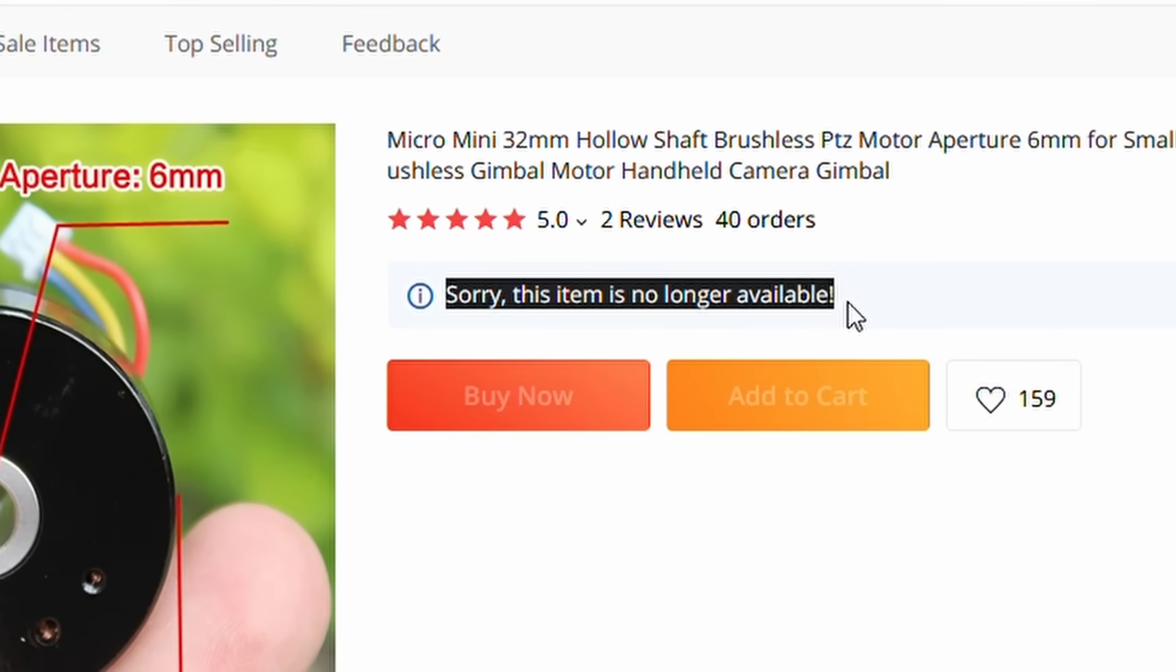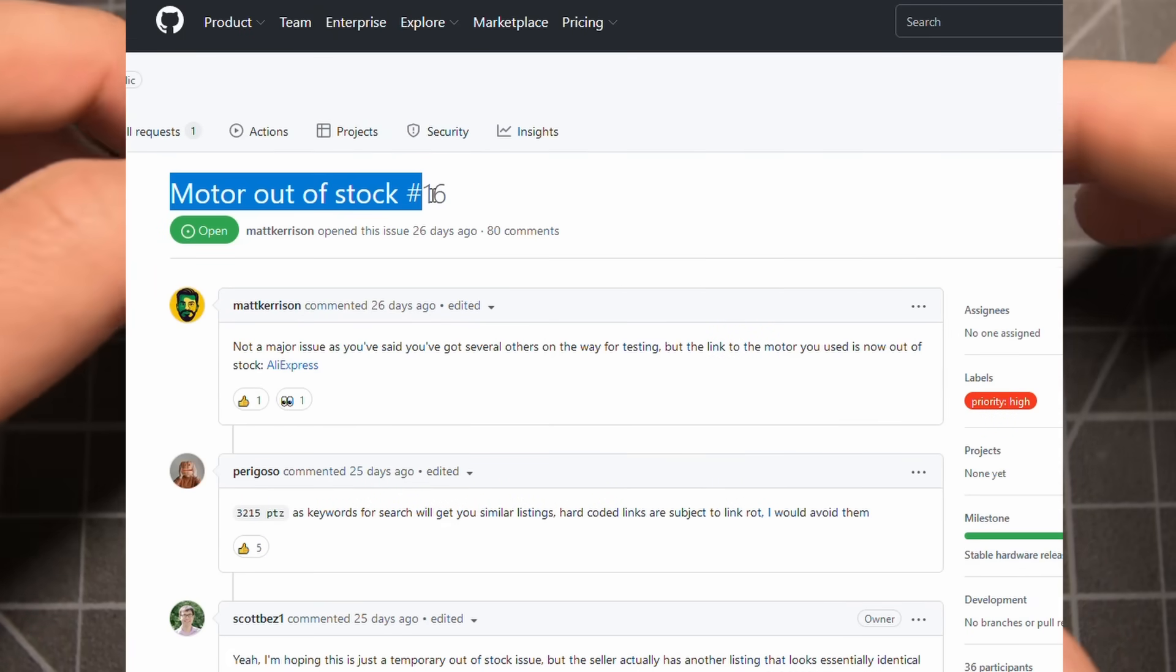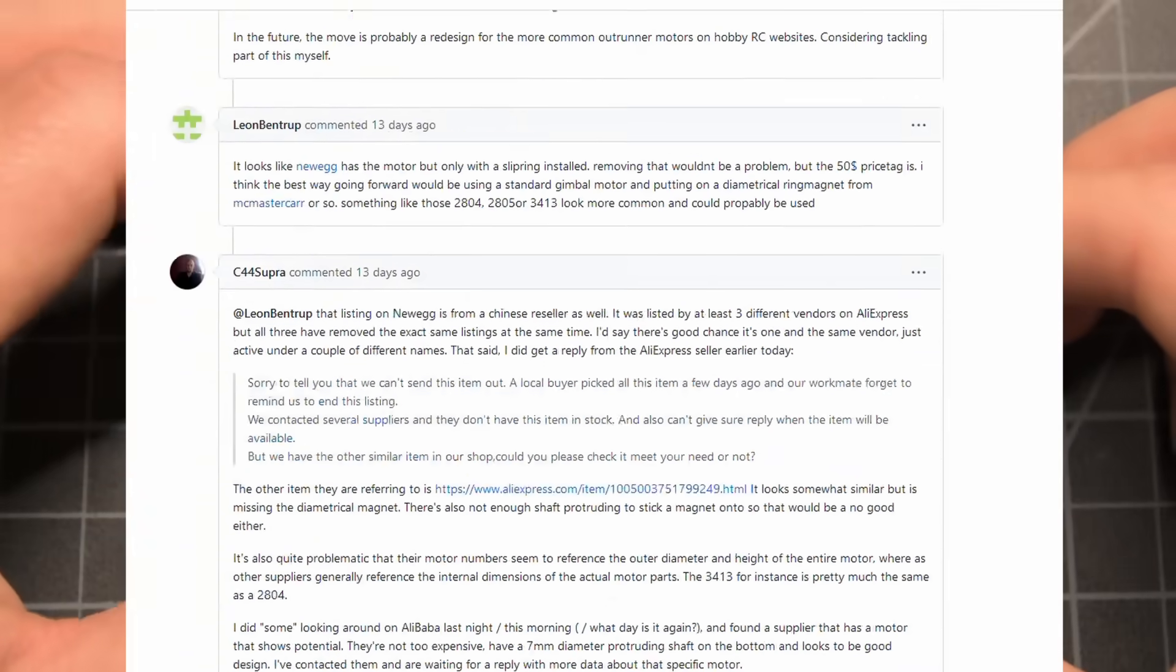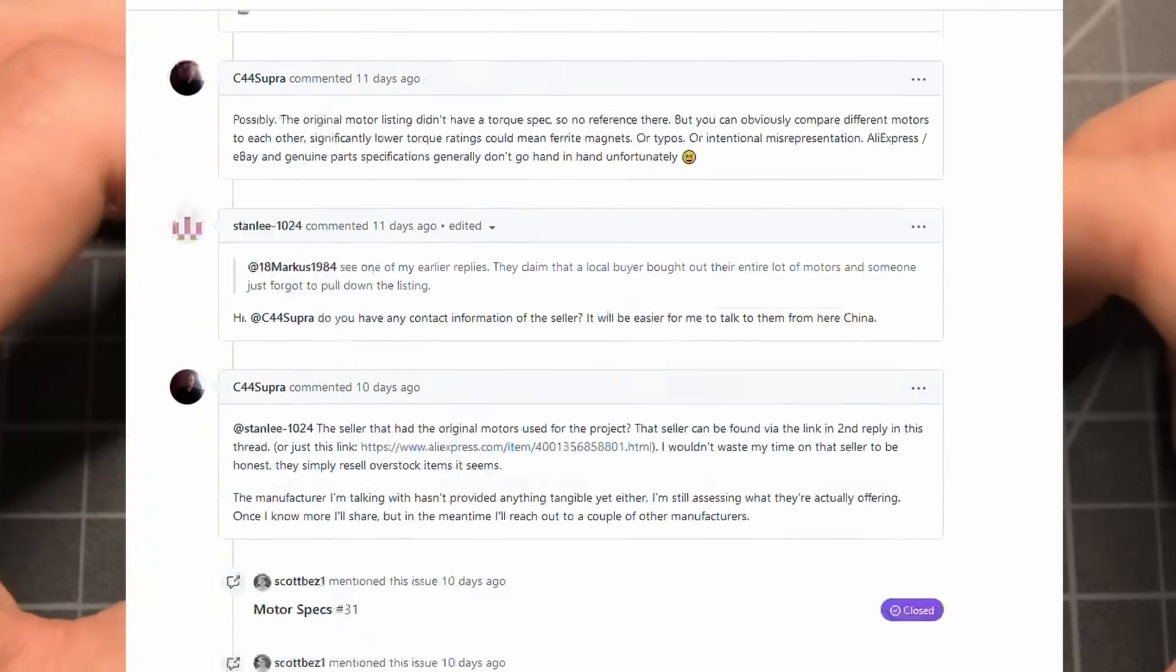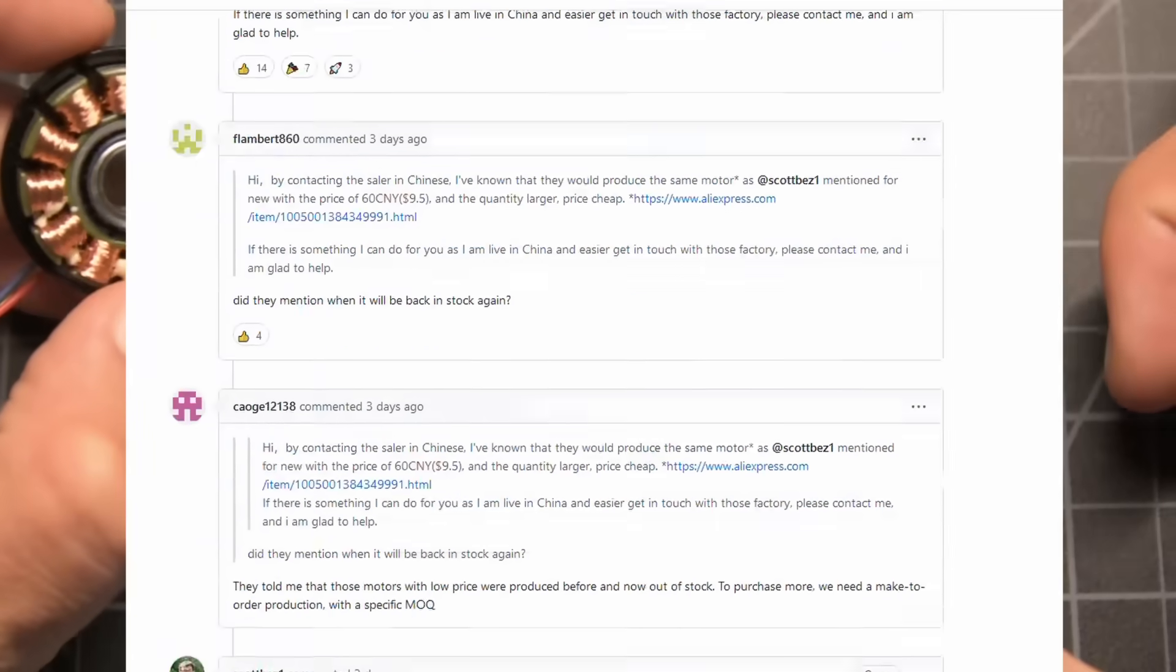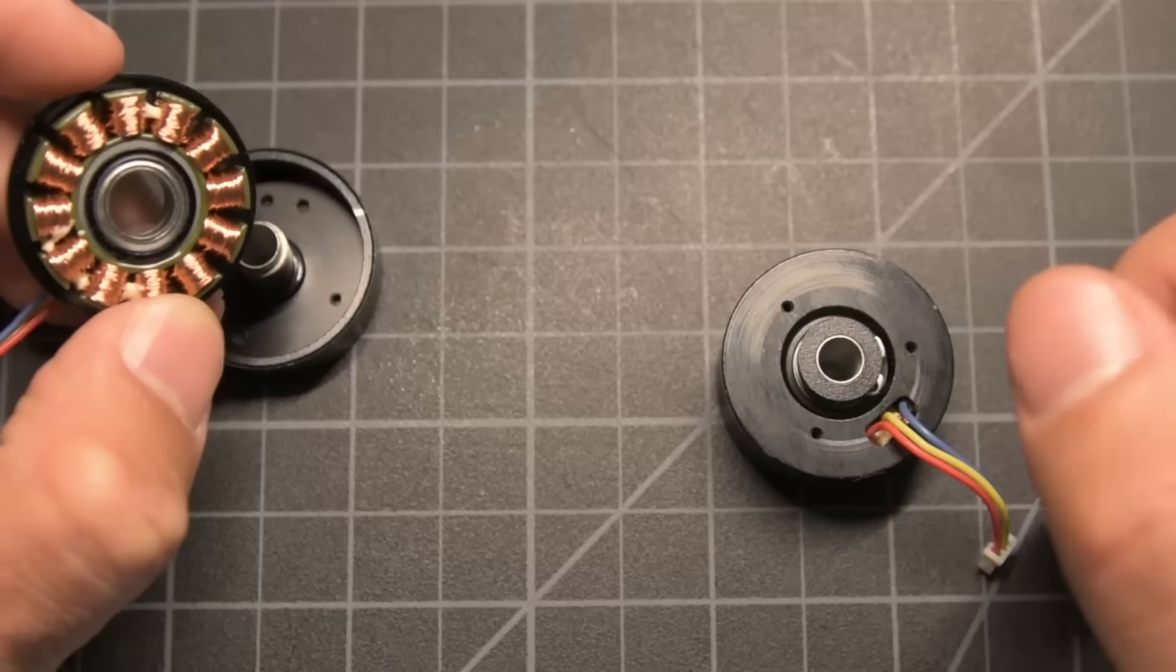The good news is that there's been a ton of interest in the project, so there's some very active discussion about finding a good replacement. We may even get some motors custom manufactured if we can't find an existing product. I really want all of you to be able to build one of these yourself. You can follow along with the motor discussion on GitHub, but let's keep exploring how the smart knob works.